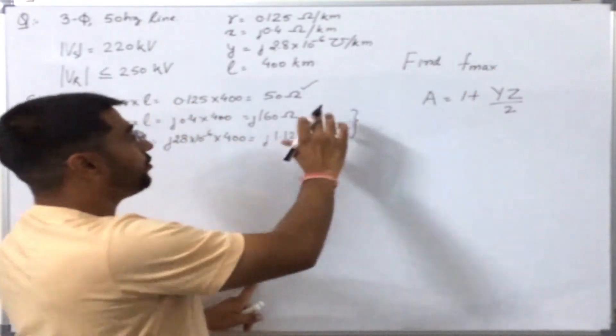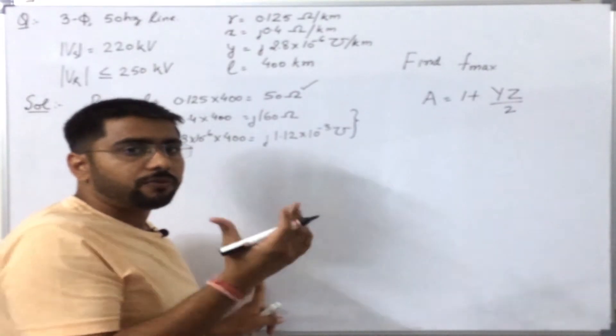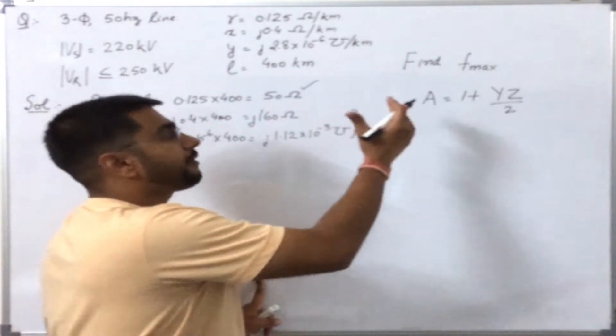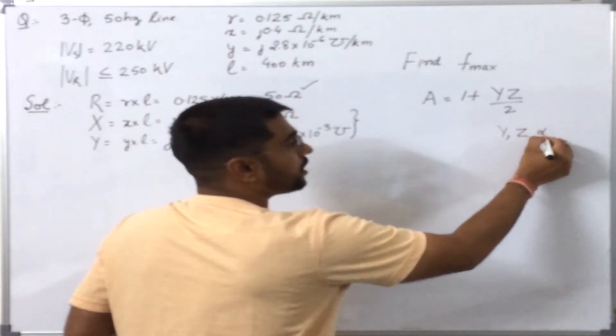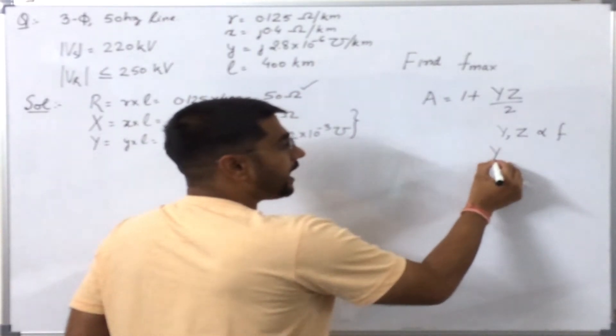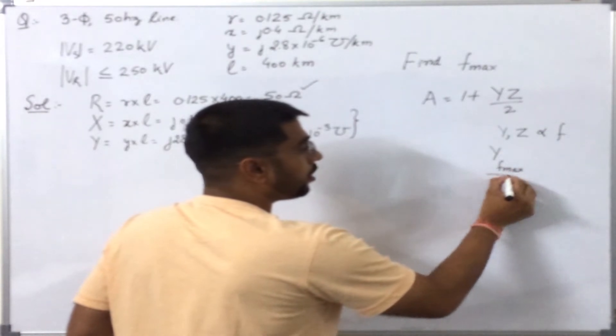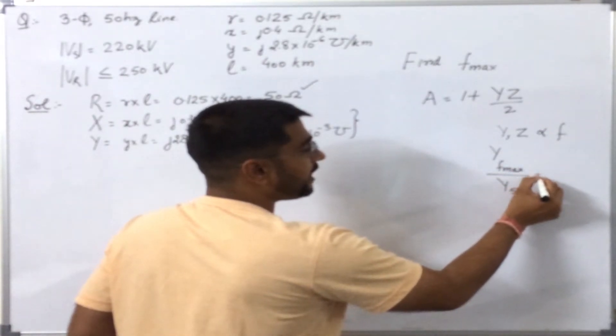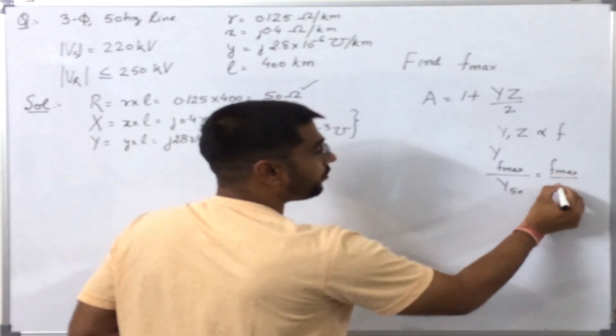If these are given at 50 hertz, we should know their value at the new frequency. We know that Y or Z are proportional to frequency. So I can say that Y at f_max over Y at 50 hertz is simply equal to f_max over 50.